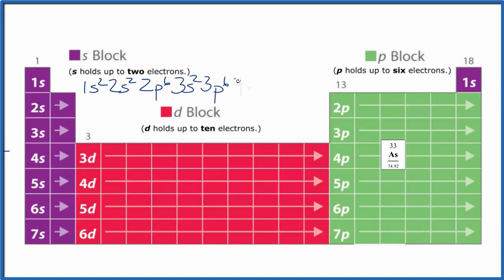Fourth energy level: 4s2. Then we have 3d: 1, 2, 3, 4, 5, 6, 7, 8, 9, 10. D holds up to 10, so 3d10.